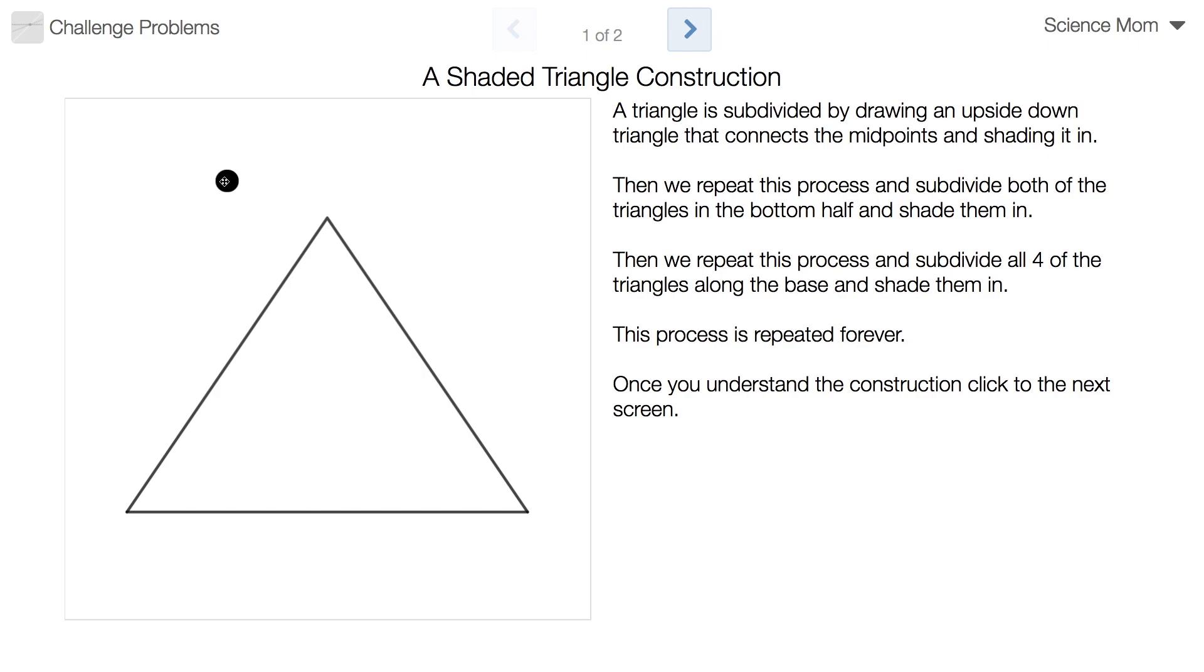We join each of the three sides right in the middle and I shaded this upside down triangle. Then I repeated that on the bottom - upside down triangles with their vertex along the bottom edge. And I just kept repeating this over and over, forever and ever. Infinitely many times.